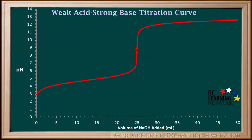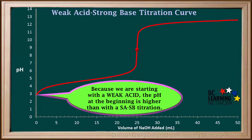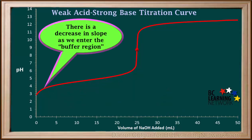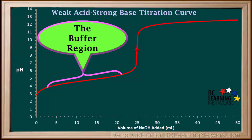Now we'll look at the main features of a weak acid-strong base titration curve using this graph as an example. Because we're starting with a weak acid, the hydronium concentration starts lower and the pH starts higher than with a strong acid-strong base titration. There is a decrease in slope soon after starting, where the weak acid is in excess and a salt of a weak base starts forming, hence producing a buffer solution. Weak acid-strong base titration curves have a buffer region shortly after starting, and the buffer solution that forms minimizes the change in pH as more base is added, so the slope of the curve stays shallow for a time.